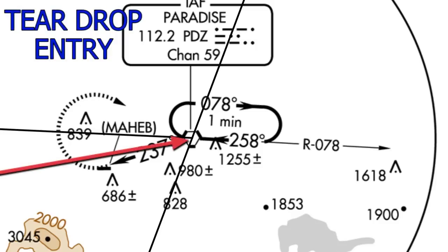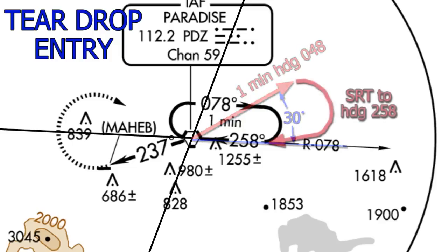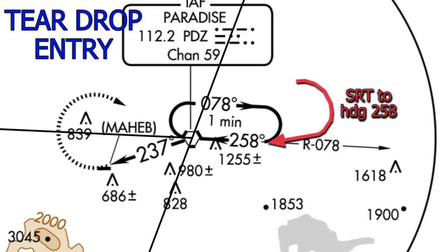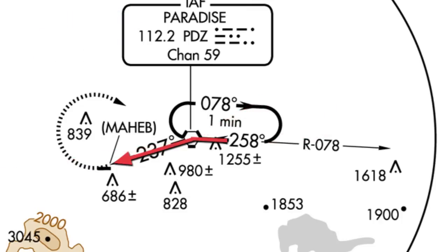If we are approaching the IAF from the third area, we will do a teardrop entry. We fly to the Paradise VOR and after overflying it, establish ourselves on a heading 30 degrees offset from our outbound heading — in this case heading 048. We fly 048 for one minute, then do a standard rate turn to the right which puts us in position to intercept a heading of 258 to the Paradise VOR. Upon intercepting 258 we overfly the VOR and proceed with the rest of the approach. All three procedure turns ultimately put us in position to intercept a heading of 258 to the Paradise VOR.